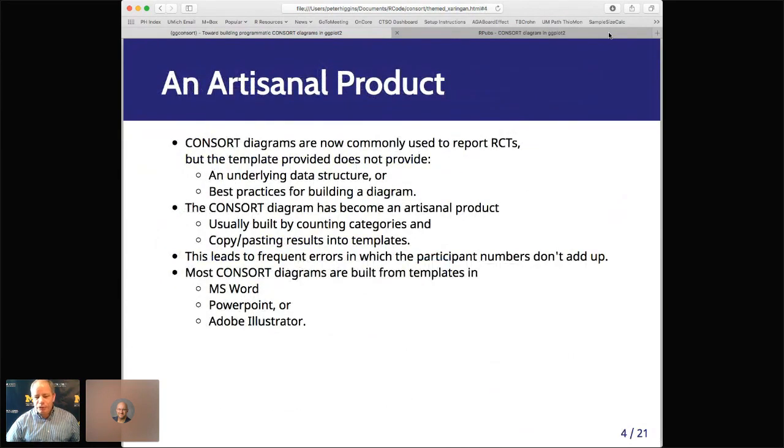There's no underlying data structure or best practices for building a consort diagram. So it's sort of become an artisanal product built by counting categories and then copying and pasting the results into templates. This leads to frequent errors in which the participant numbers don't add up. And it's a great gotcha for reviewers. But it should be reproducible. And ideally, there'd be a programmatic way to do this.